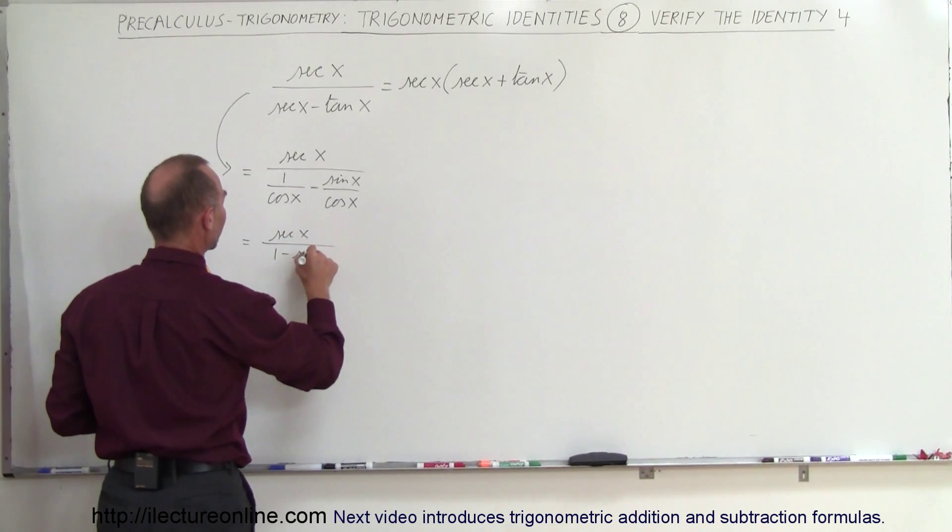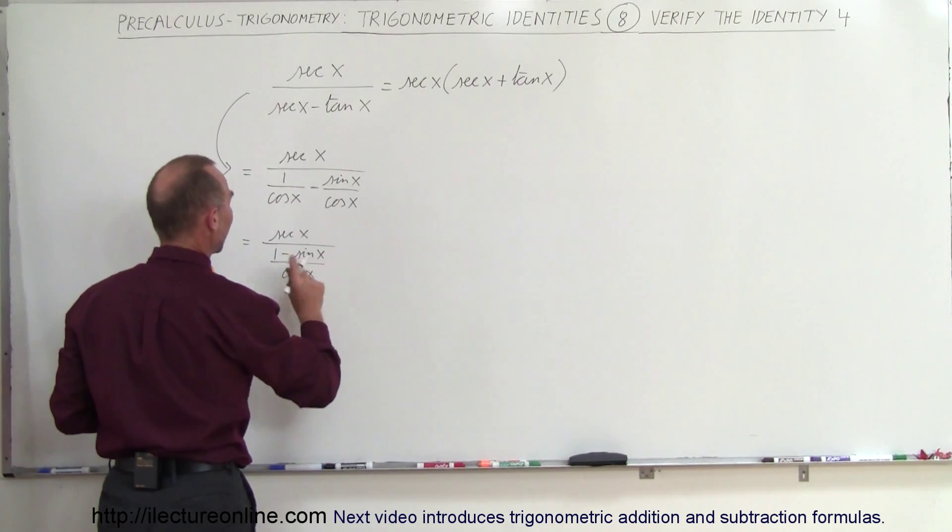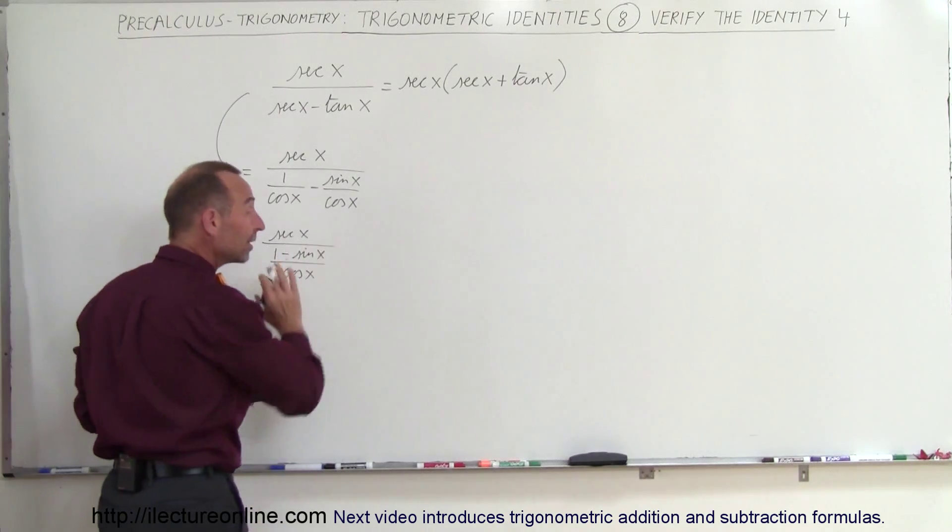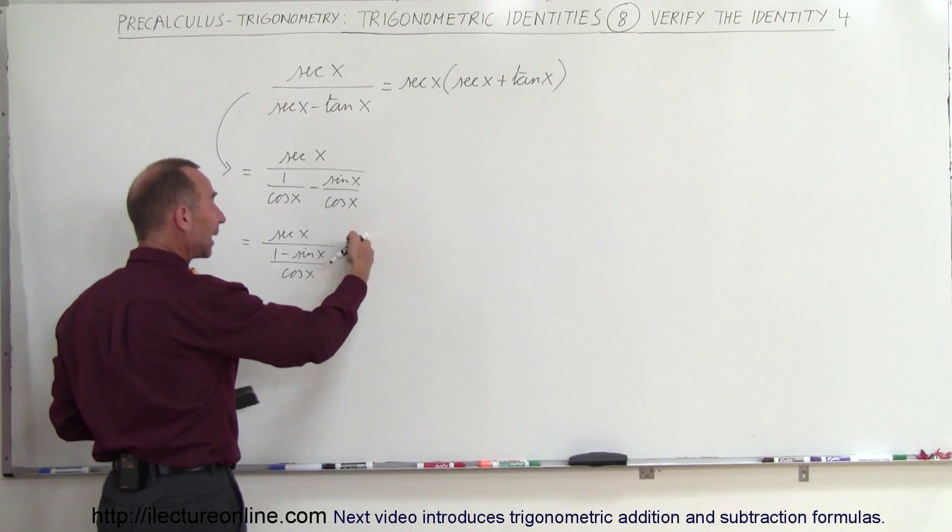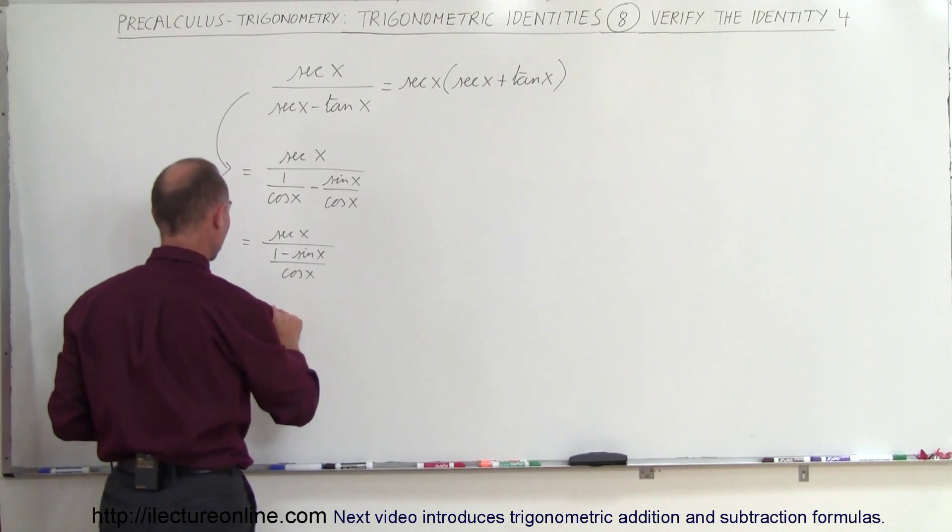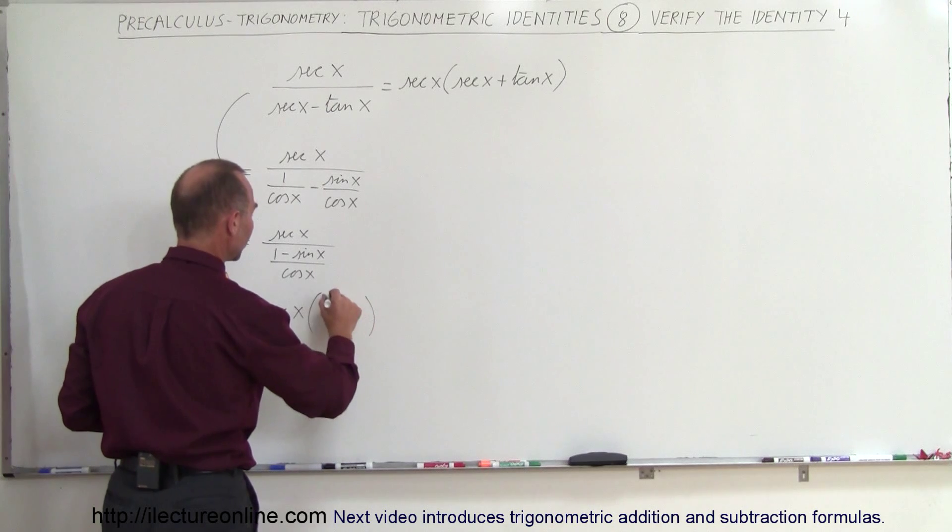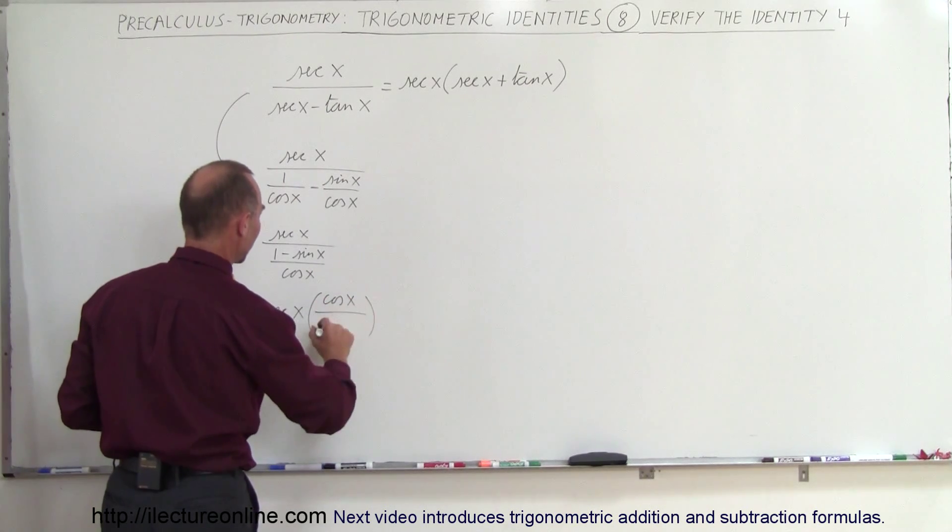1 minus the sine of x divided by the cosine of x. And now since I have the denominator written as a fraction, we can now write that as a multiplication, multiplying times its inverse. So this can be written as the secant of x times the cosine of x divided by 1 minus the sine of x.